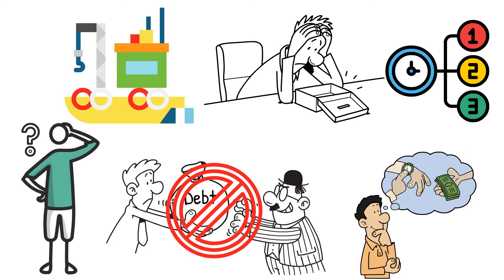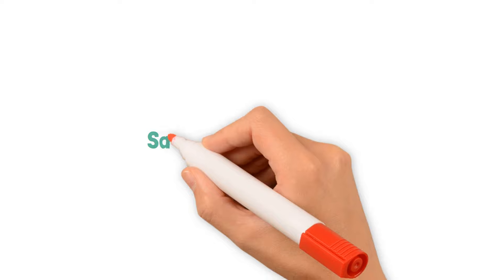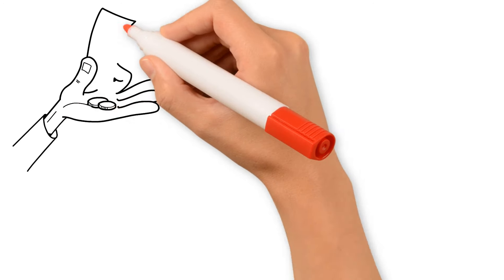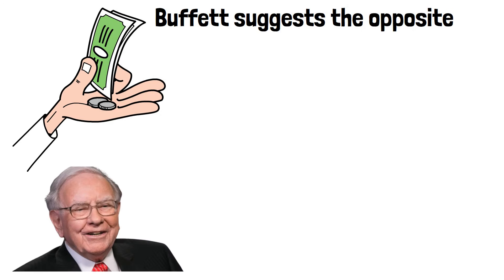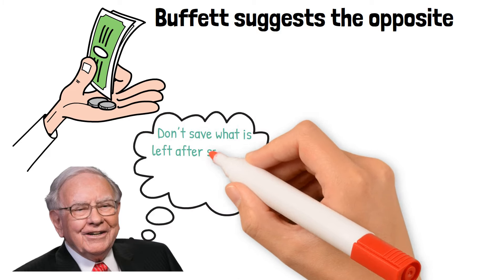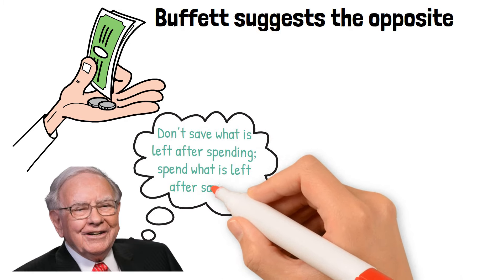Another tip for frugal living and saving more is save before you spend. Usually we spend first and save whatever's left. But Buffett suggests the opposite. Buffett advises, don't save what is left after spending. Spend what is left after saving.